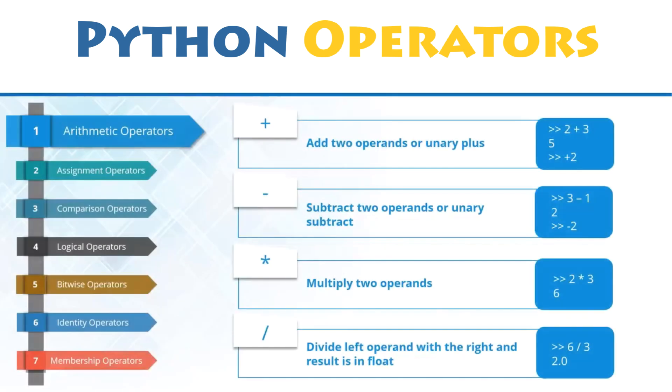Arithmetic operators are used to perform common mathematical operations in Python, like addition, subtraction and multiplication, but also division, among so many others.